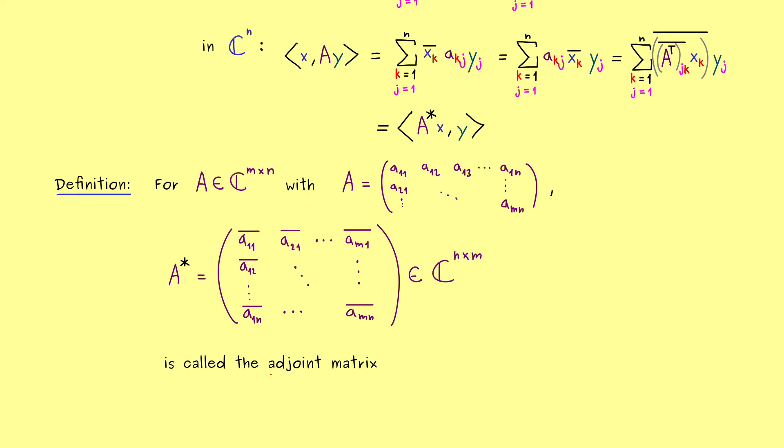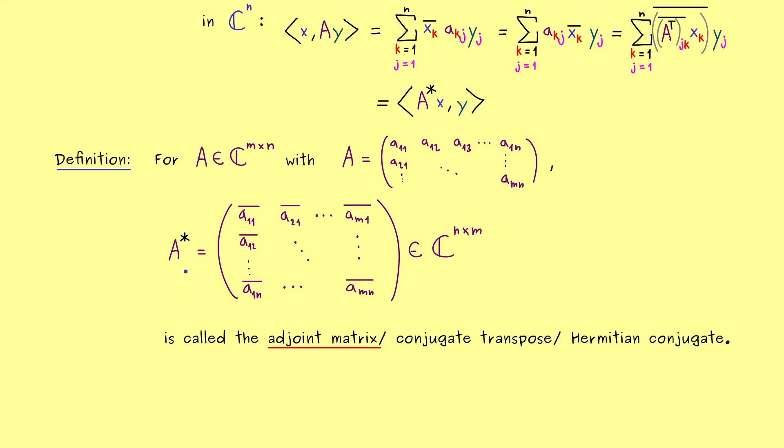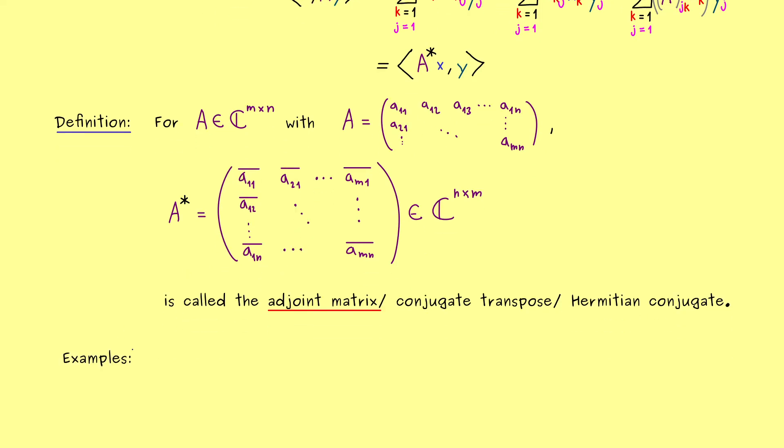And I already told you, the new matrix here we call the adjoint matrix of A. But don't forget, there are also other names around, for example, conjugate transpose or a Hermitian conjugate. And because of the last name, you sometimes also see a capital H instead of a star in the notation.